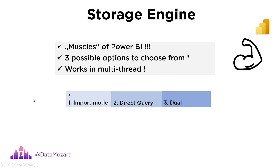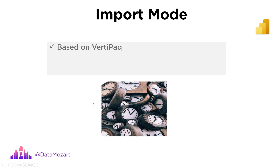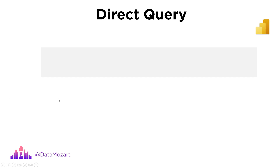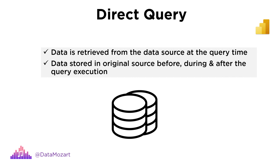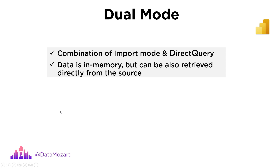Import mode is the most common way to store data when working with Power BI. Import mode is based on VertiPaq — table data is stored in memory as a snapshot, and this snapshot can be refreshed periodically. When using DirectQuery mode, data is retrieved from the data source at query time, meaning data resides in its original source before, during, and after query execution. Finally, Dual mode represents a combination of the previous two: data from the table is loaded into memory, but at query time it can also be retrieved directly from the source.